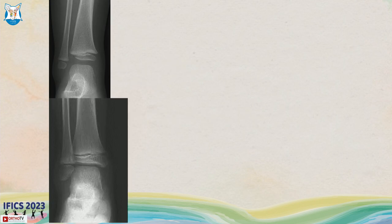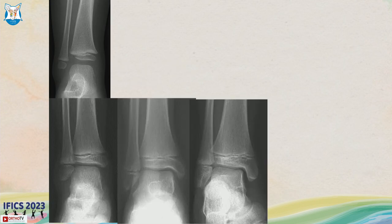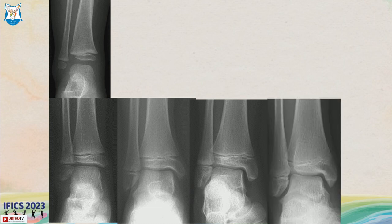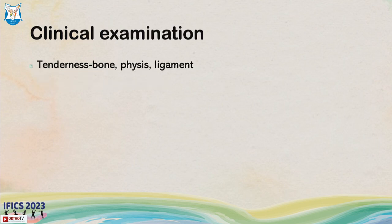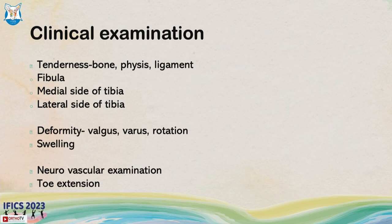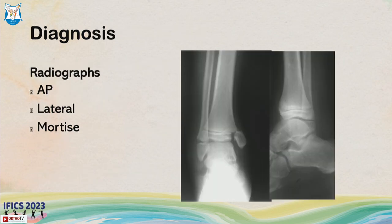The ossification center of the distal tibia appears between six months to two years, then the distal fibula, then the medial malleolus, and they begin to close between 15 to 17 years. There is asymmetrical closure which makes physeal injuries more common in the adolescent. On clinical examination, look at the whole ankle: deformity, tenderness, swelling, neurovascular status, and toe movements.